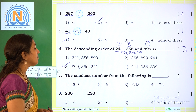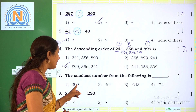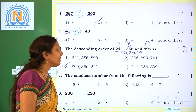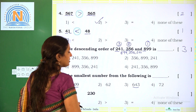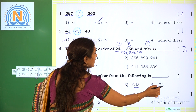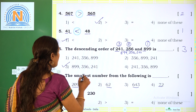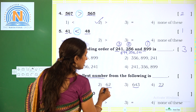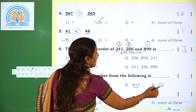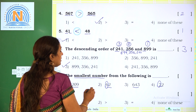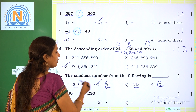Next: the smallest number from 209, 62, 643, and 72. Here 209 and 643 are 3-digit numbers, and 62 and 72 are 2-digit numbers. The 3-digit numbers are greater than the 2-digit numbers. Comparing the 2-digit options: the leftmost digits are 6 and 7. Since 6 is smaller, 62 is the smallest number. The required option is 2.